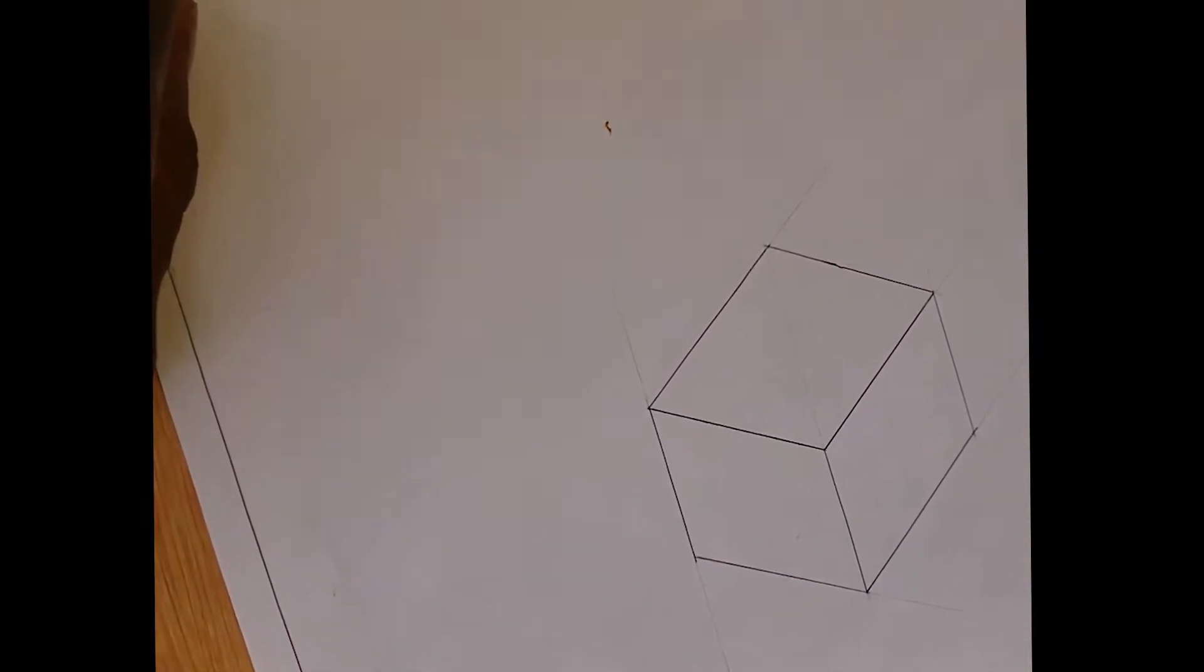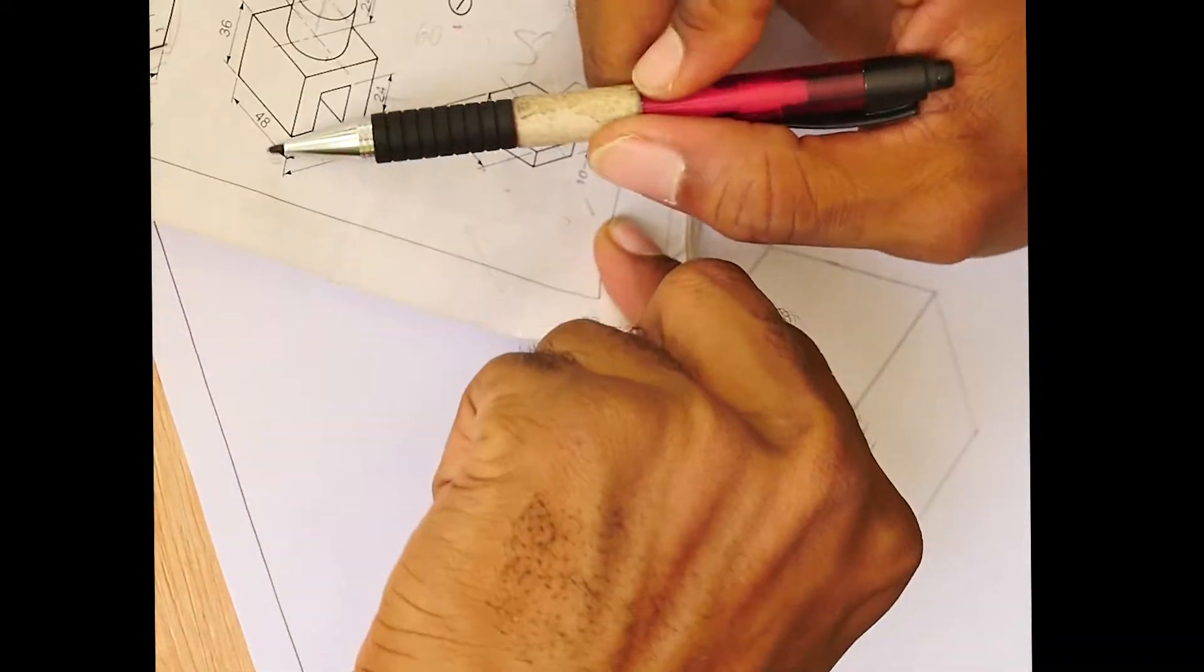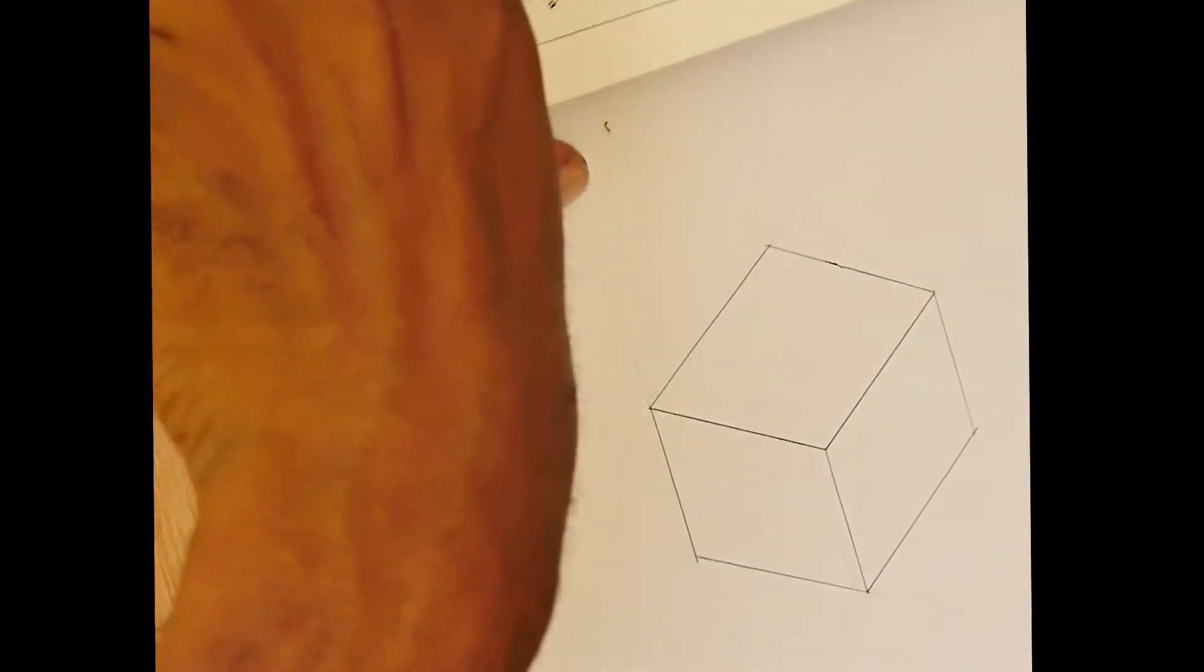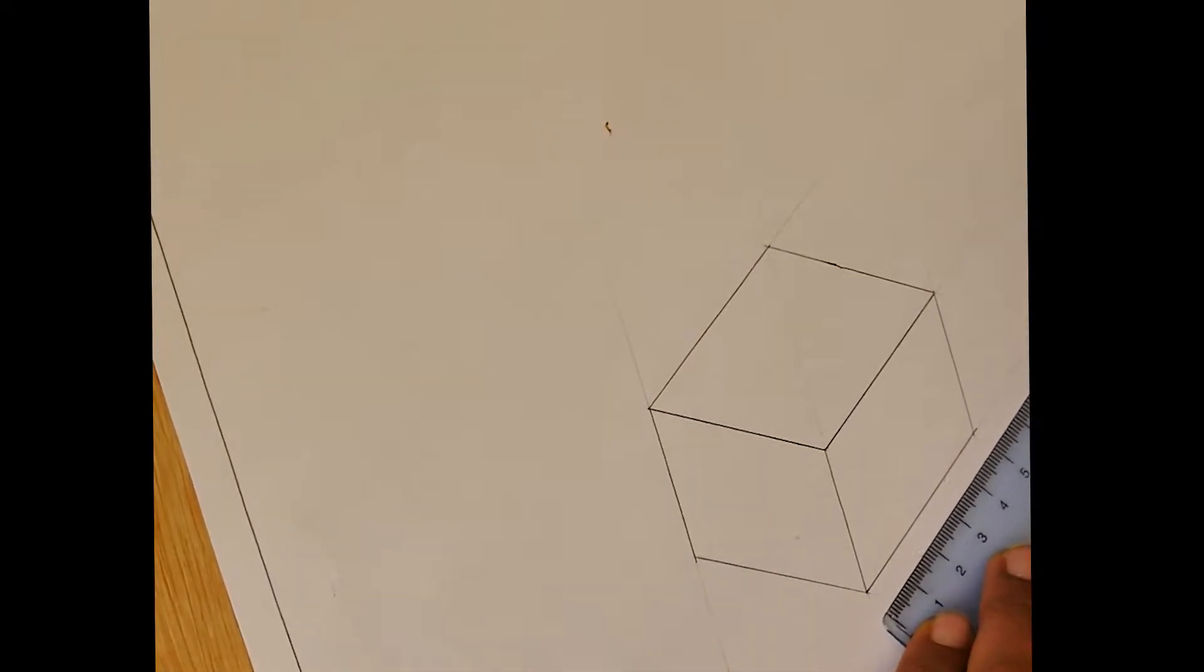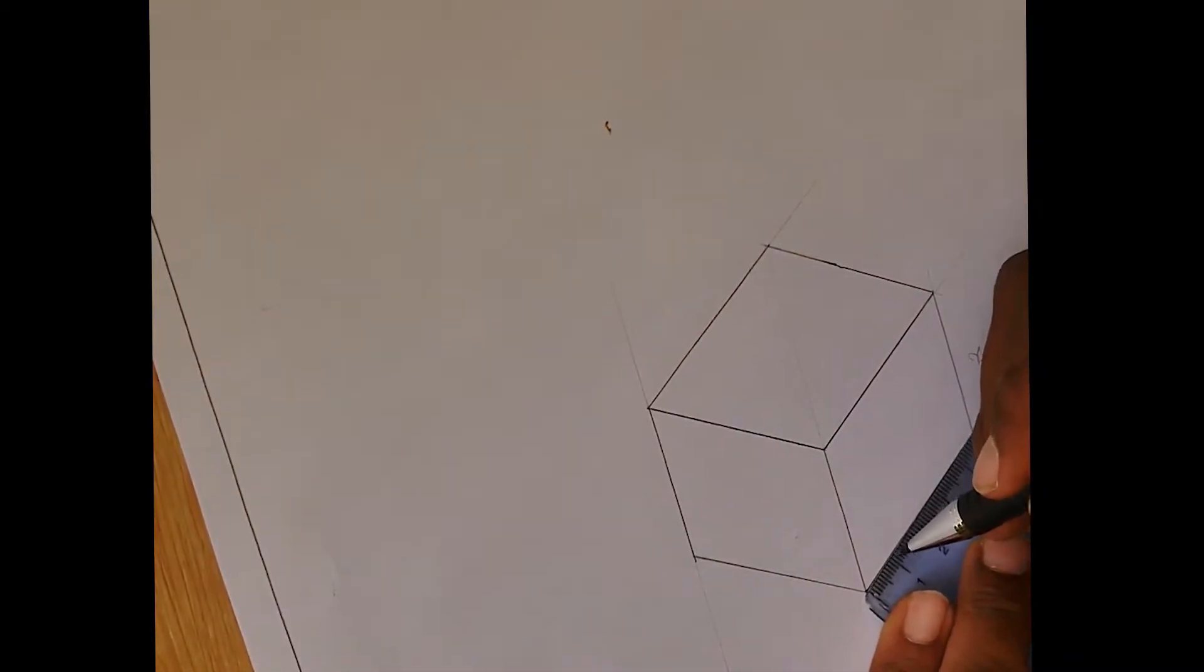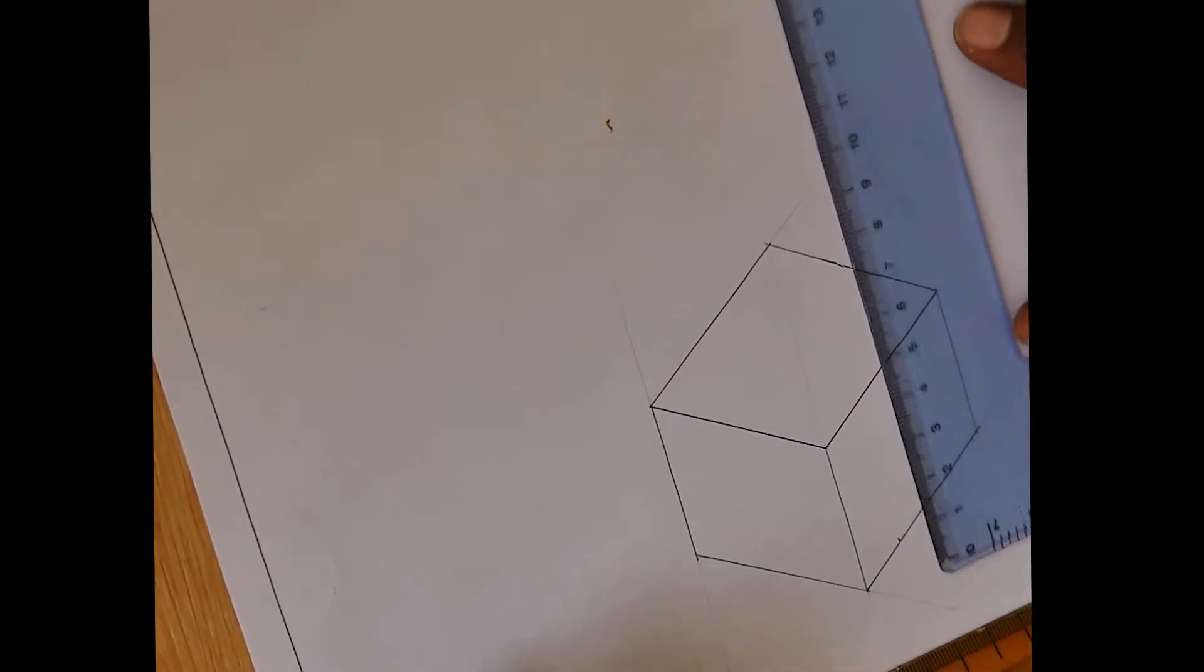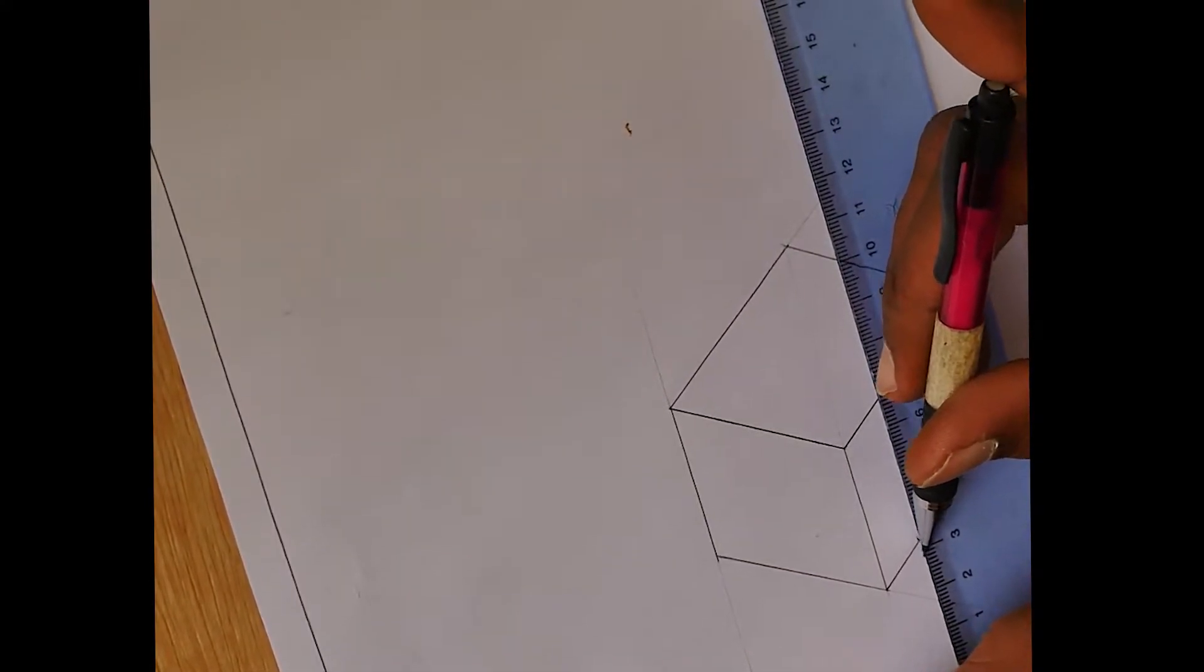Now what we need to do is we need to put in this opening. Right here. So first thing from this point here I'm going to step in 14 millimeters on both sides. And then I go up 24. We draw the line first and then we come back and we measure. So you just draw that line roughly.